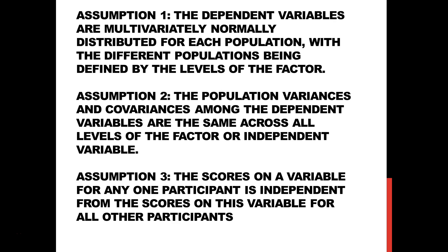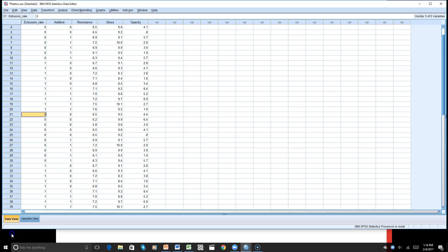For our one-way multivariate analysis of variance, Assumption 1 is that the dependent variables are multivariate normally distributed for each population, with the different populations being defined by the levels of the factor. Let's take a look at Assumption 1.